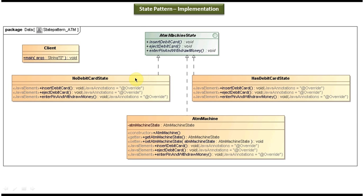If the ATM machine is in 'no debit card' state, you can insert the debit card but you cannot eject the debit card and you cannot enter the pin and withdraw the money. In 'has debit card' state, you can enter the pin and withdraw the money and you can eject the debit card, but you cannot insert the debit card because the ATM machine slot already has one debit card. The ATM machine also implements ATM machine state and provides implementation of insert debit card, eject debit card, and enter pin and withdraw money.